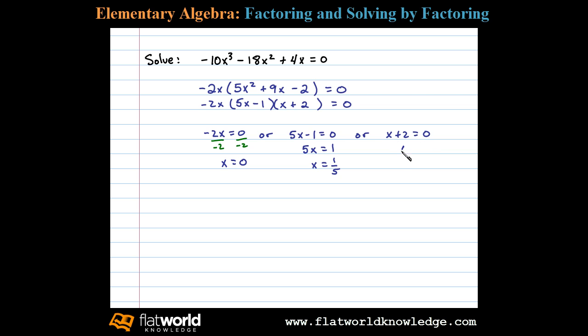And then finally, subtracting 2 on both sides, we have the third solution x equals negative 2. So this equation has three solutions: 0, 1 fifth, and negative 2.